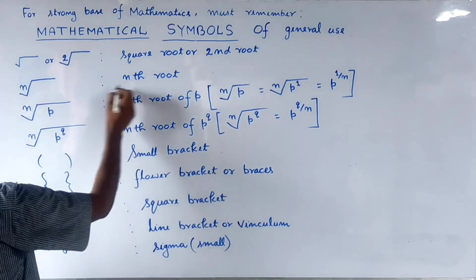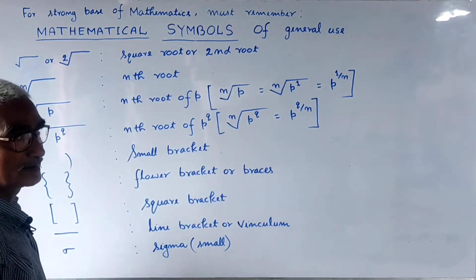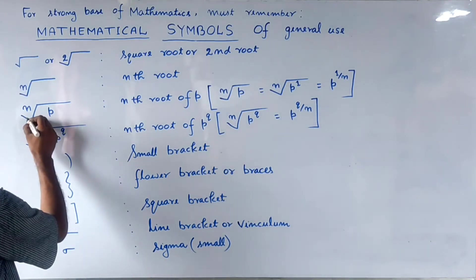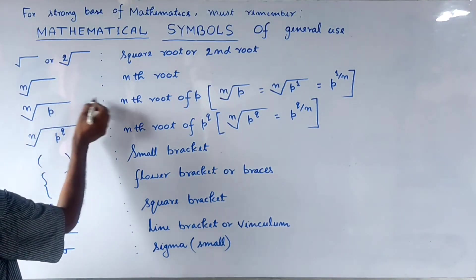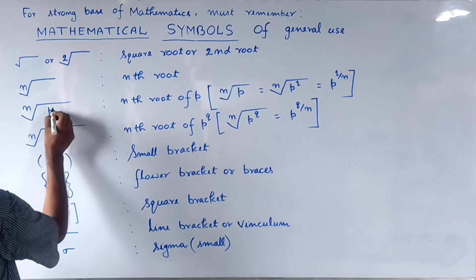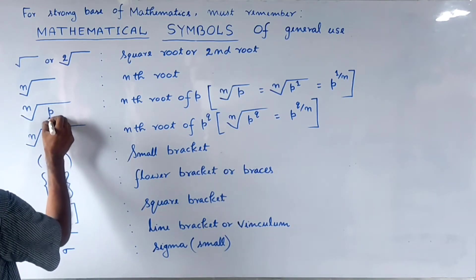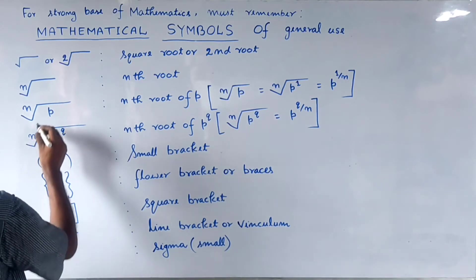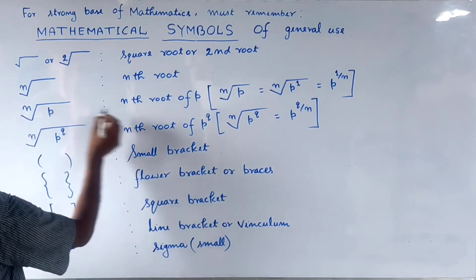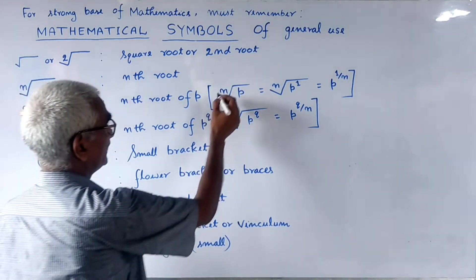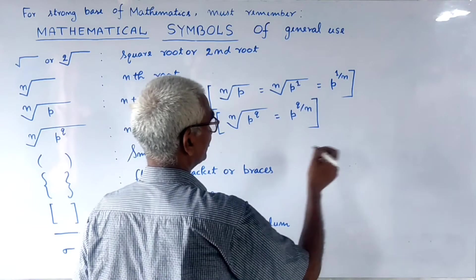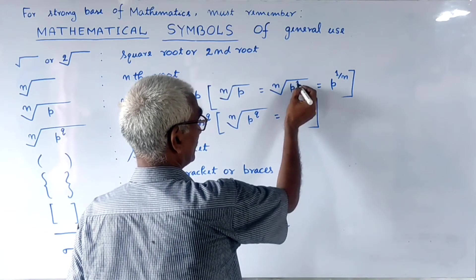We write it as the Nth root. In Hindi it is called the Nth root. If we write the symbol of root, we call it the Nth root of P. The Nth root of P means P to the power 1 over N.